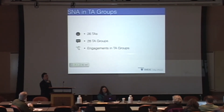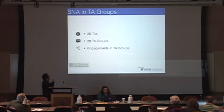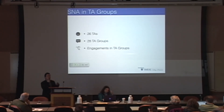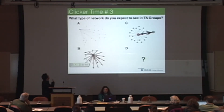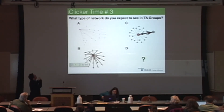This is another view: how about if we go into individual TA groups? We had over 28 TA groups last semester with 26 TAs with different teaching styles. How do their groups look in the social network analysis? Think about it and take a guess: what type of network inside the TA groups do you expect to see? Something like A, something like B, something like C, or none of the above?